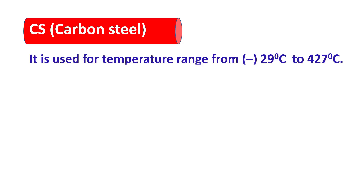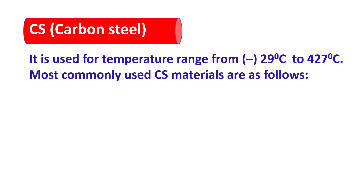CS — carbon steel. It is used for a temperature range from minus 29 degrees Celsius to 427 degrees Celsius. Most commonly used CS materials are as follows.